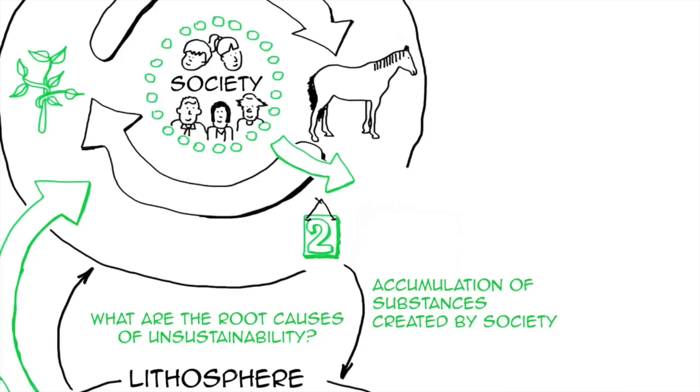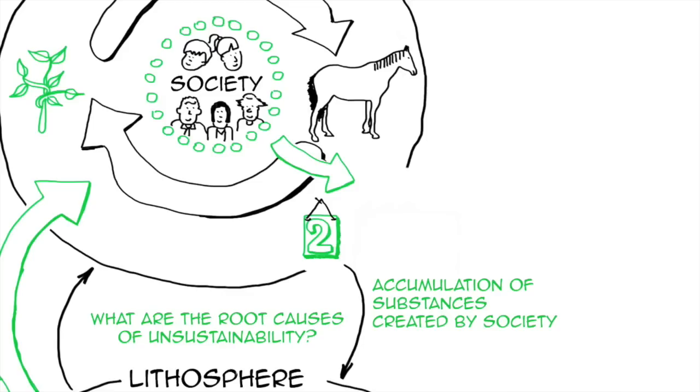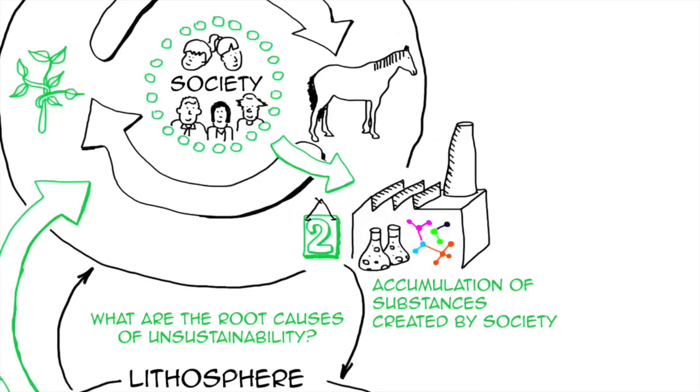The second one is that we create in our society substances that accumulate in nature. So we create chemical compounds that nature takes a very long time to break down.